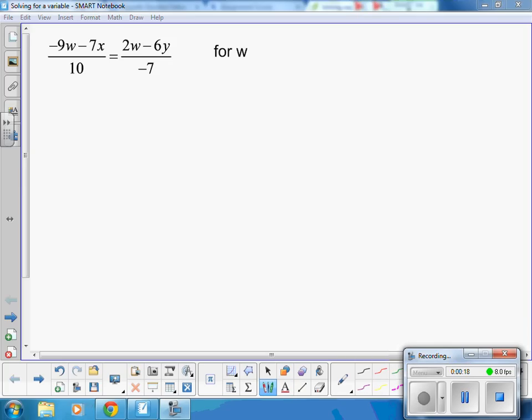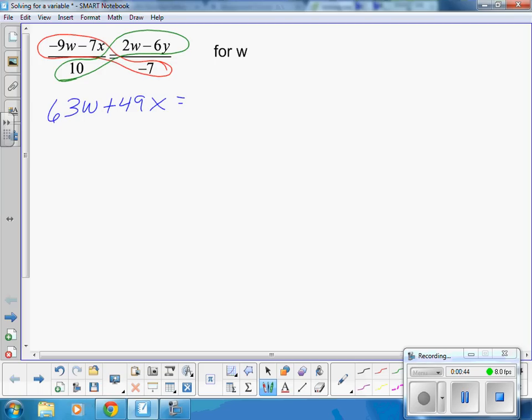We are going to multiply using what's called cross products. We will be using the distributive property when we do that. A negative 7 times a negative 9 is a positive 63. A negative 7 and a negative 7 give you a positive 49.